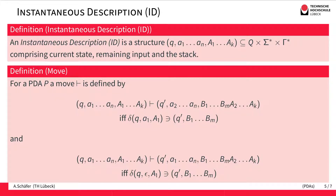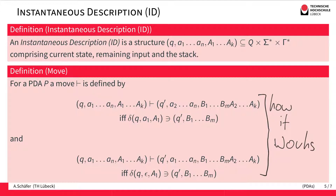Now that we have the idea of the instantaneous description, we can use IDs to define how a PDA works. We define a move relation, usually denoted by the turnstile symbol, which denotes a move of the PDA. There are two possible kinds of moves.